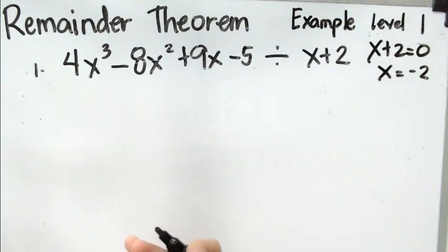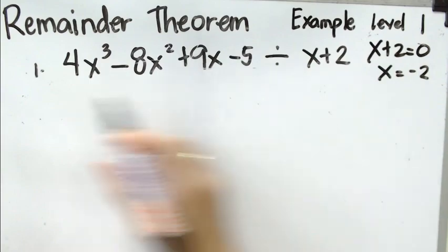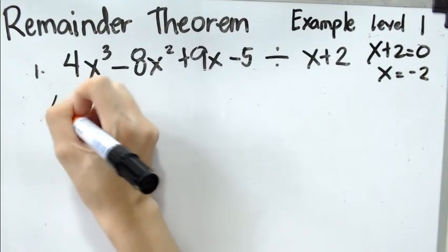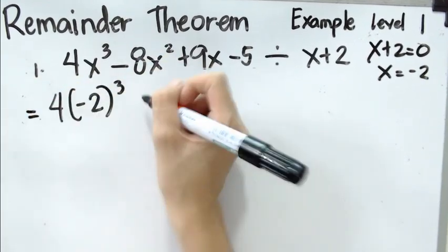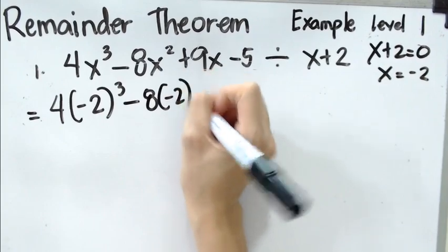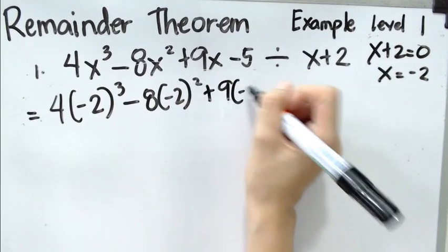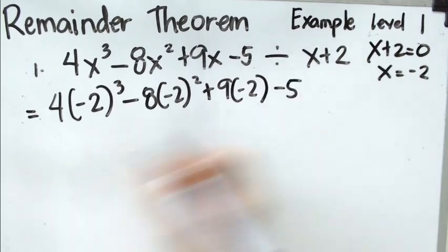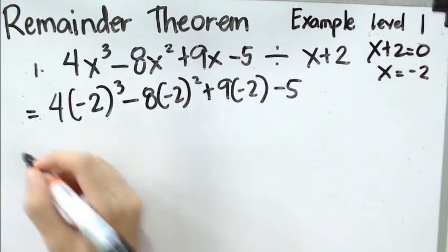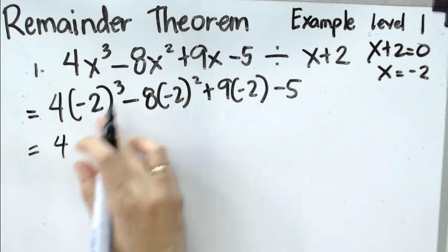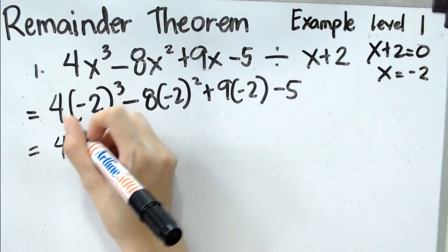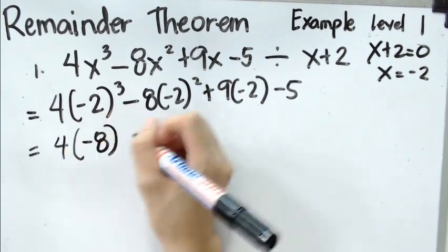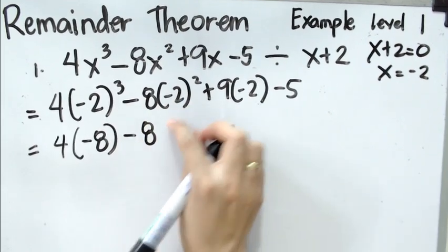In our past lessons, when we say evaluating, we simply substitute the value of x into the given polynomial. So we have 4 times (−2)³ minus 8 times (−2)² plus 9 times (−2) minus 5. Negative 2 cubed means −2 × −2 × −2, which gives negative 8.